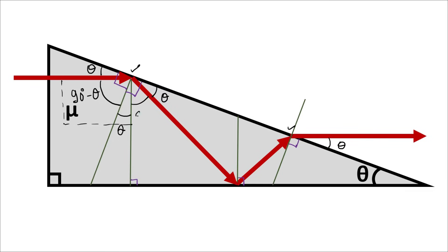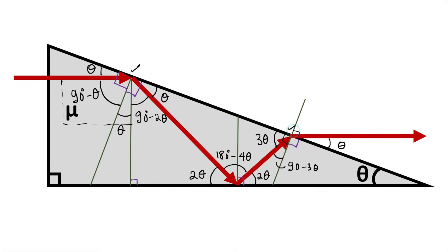This angle is theta and this angle is 90 degrees, so this angle is 90 minus theta plus theta, giving 90 minus 90 minus 2 theta, so this angle is 90 degrees minus 2 theta. In this right-angle triangle, this is 90 degrees, so the other two angles must sum to 90 degrees, making this angle 2 theta. This is the incident ray and this is the reflected ray, so if this is 2 theta, then this is also 2 theta. So this angle is 180 degrees minus 4 theta.